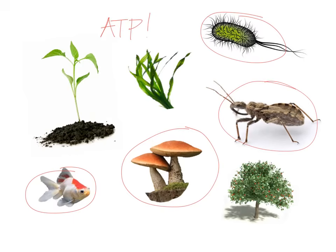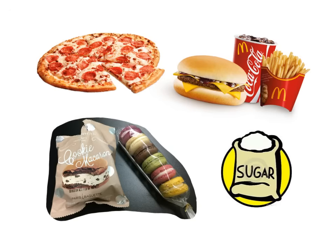The way we get ATP is through cellular respiration. In order to make ATP, we need a source of glucose. Luckily, humans can eat pizza, burgers, and other foods to actually make their ATP. Plants, on the other hand, can't just cook up a meal and eat food to make their ATP — so they are a special case of how organisms make food.